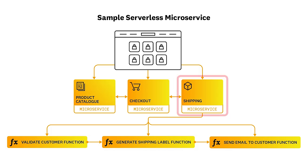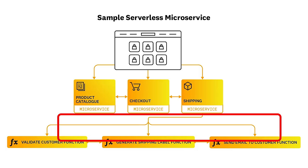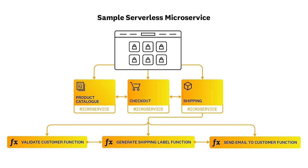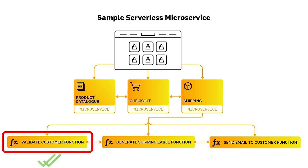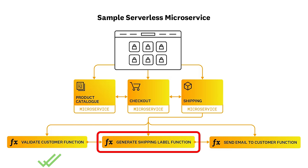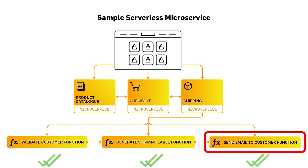In a serverless application — specifically serverless microservices — we break the microservices down even smaller into their own individual event-driven functions. For example, the shipping microservice will have multiple functions within. Once an order is marked as ready to ship, that event could trigger a function that validates the customer. A successful validation could trigger another function that generates a shipping label. And finally, creation of that shipping label could trigger a final function that sends a shipping confirmation email to the customer. They're built with serverless functions which execute small blocks of code, with one block of code triggering the next.